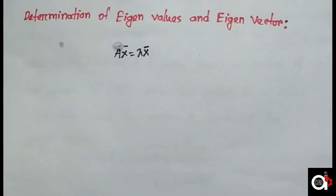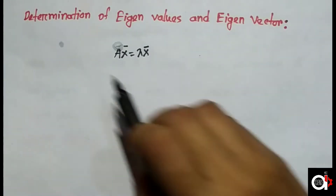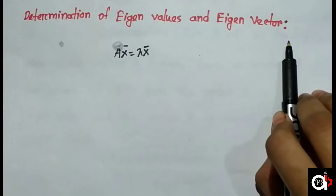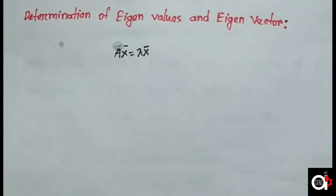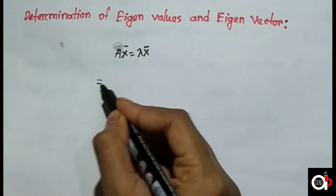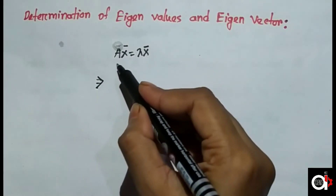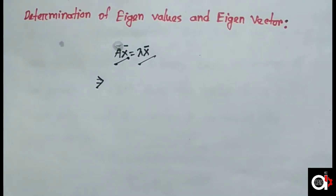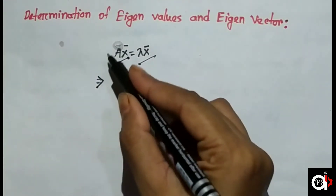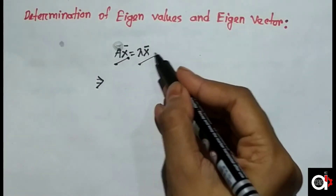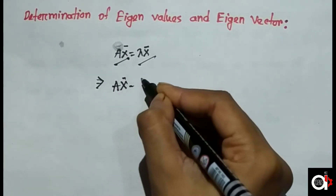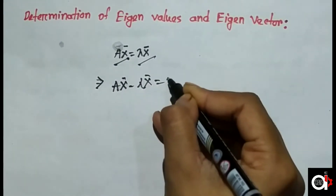Now let's see how we determine eigenvalues and eigenvectors. We start with the condition Ax = λx. Moving everything to one side, we get Ax minus λx equals zero.